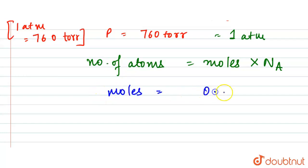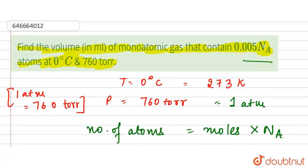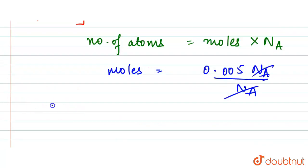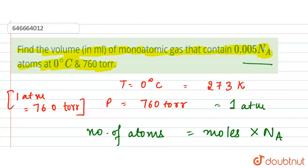Here we are given with the atoms already, so we will find out the moles. So moles will be equal to 0.005 N_A upon N_A. So this Avogadro number will be cancelled, so we get the moles is equal to 0.005.